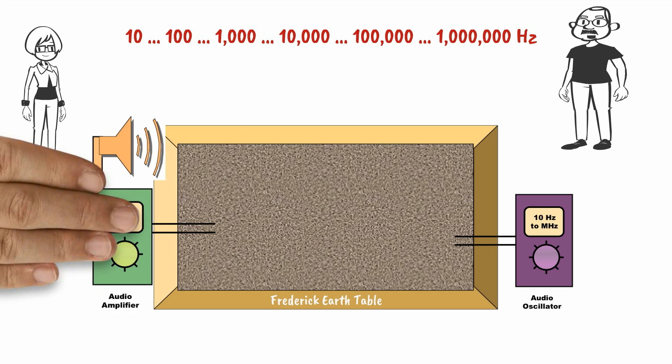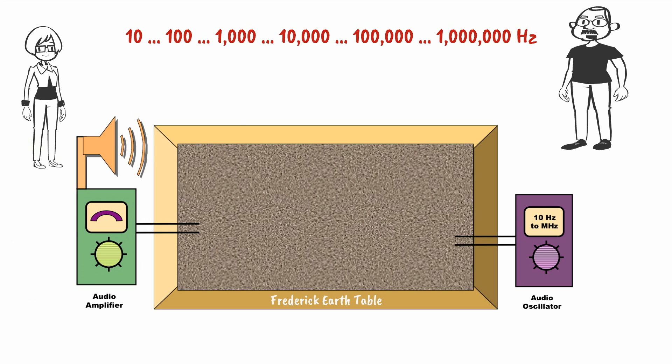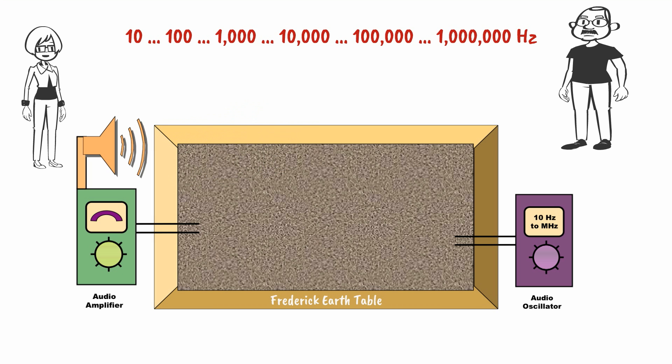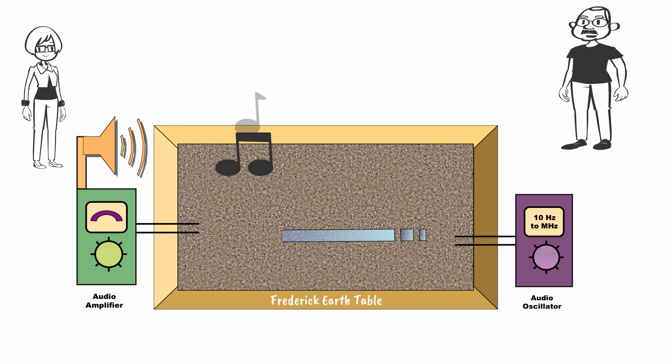At the other end of the Frederick Earth table I added an audio amplifier as shown here. When I turned both units on, we had sound. The human ear is capable of detecting sound frequencies between 20 and 20,000 Hz, although we lose some of this range as we age. This demonstrates that the higher frequencies had to flow through the soil to be picked up by the amplifier.